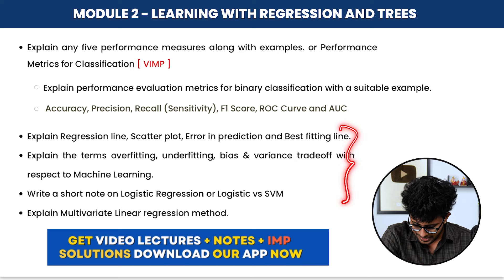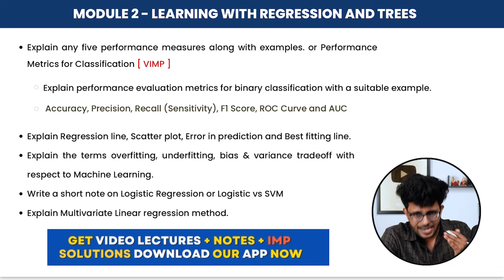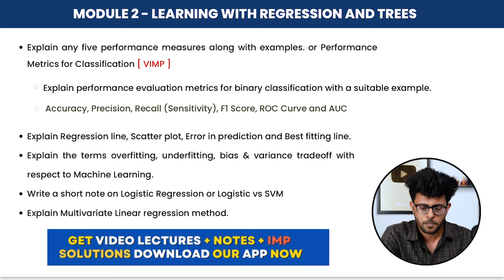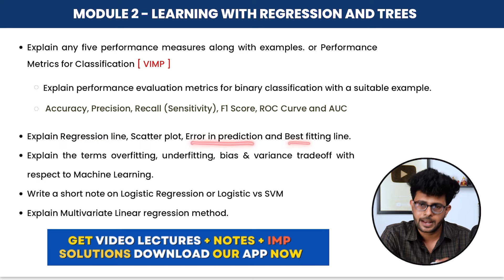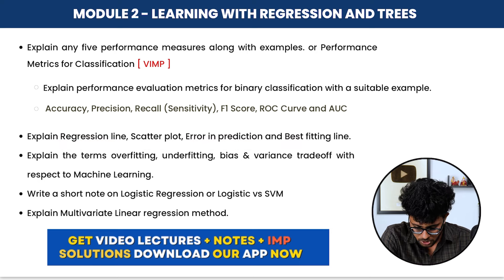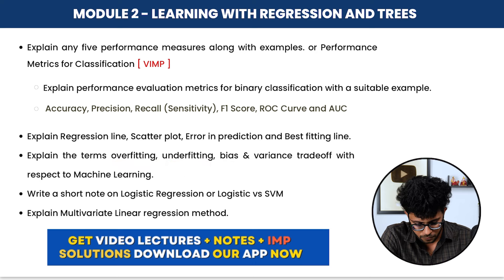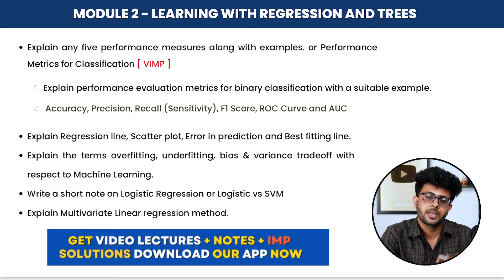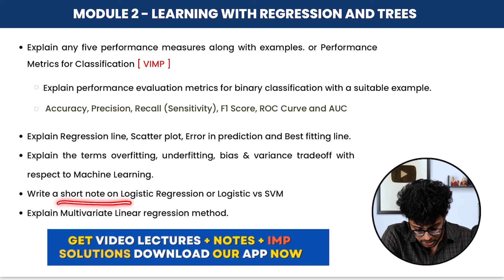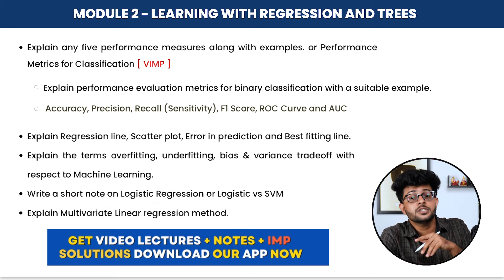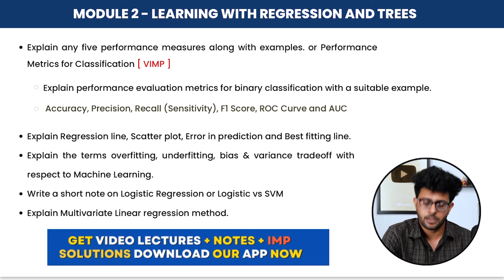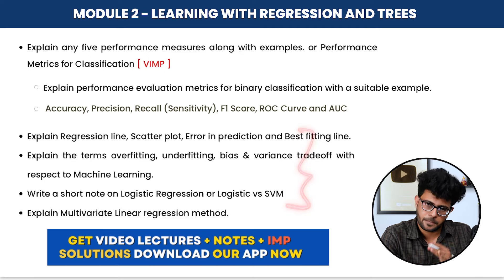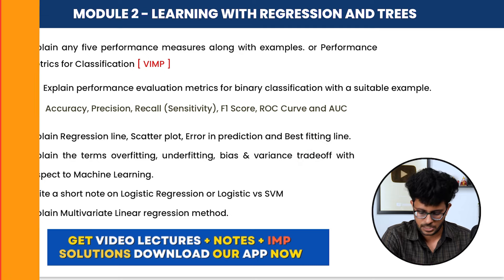Second-priority topics in Module 2 include: what is the regression line, what is a scatter plot, error in prediction, best fitting line, overfitting and underfitting, bias and variance, and the bias-variance trade-off in machine learning. You may also be asked to explain logistic regression, SVM, and multivariate linear regression. These are second priority for Module 2.